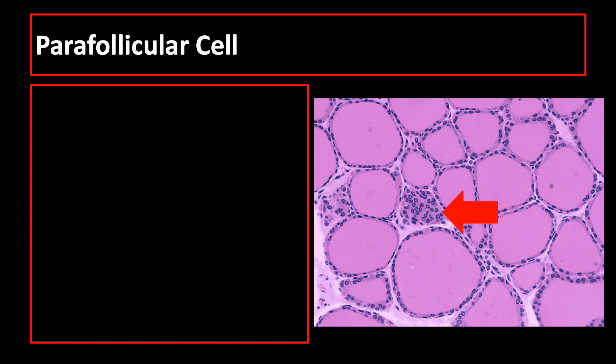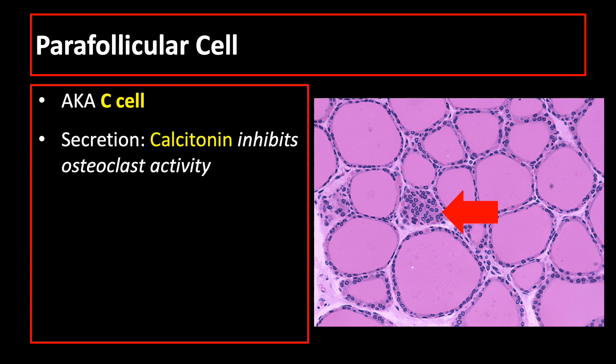Another endocrine cell type found in the thyroid gland is the parafollicular cell, also known as C-cell because it secretes calcitonin — C for calcitonin — which inhibits osteoclast activity, thereby lowering the blood calcium level. These cells are derived from neural crest.